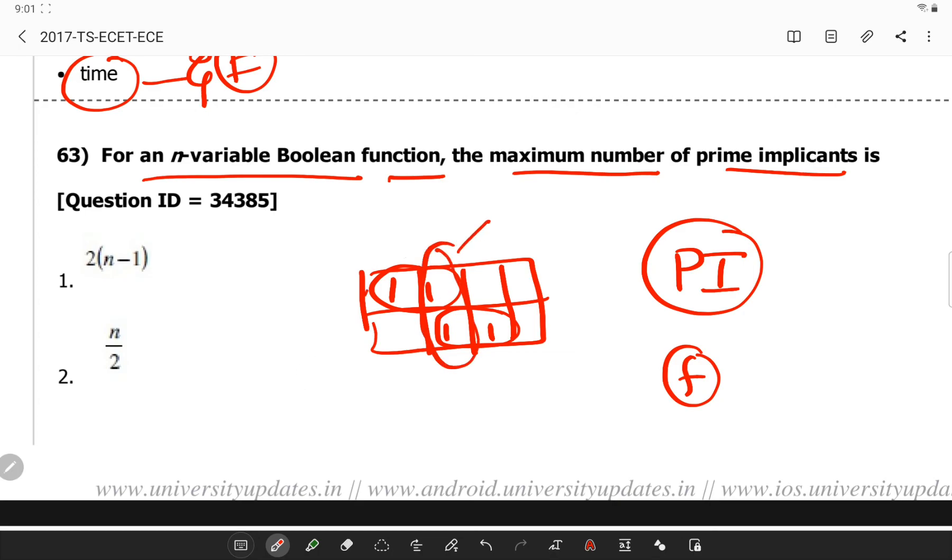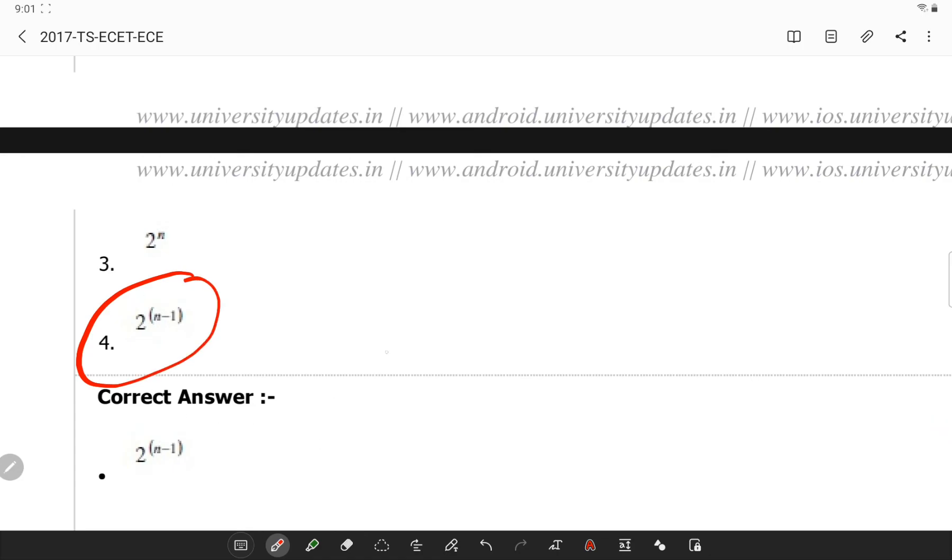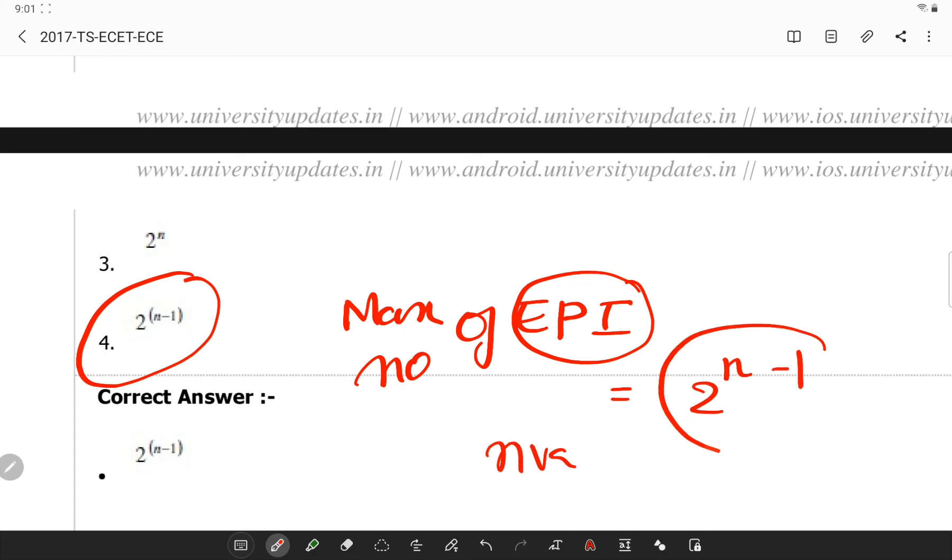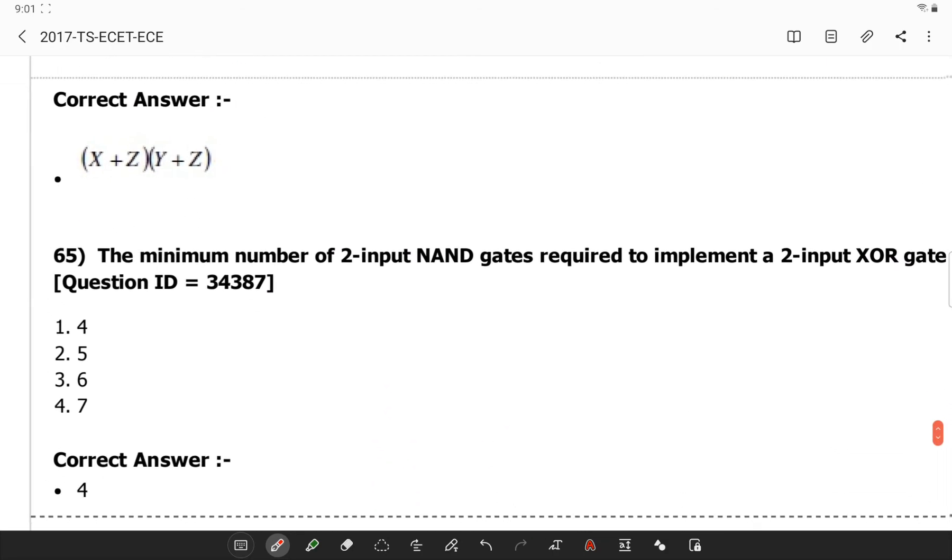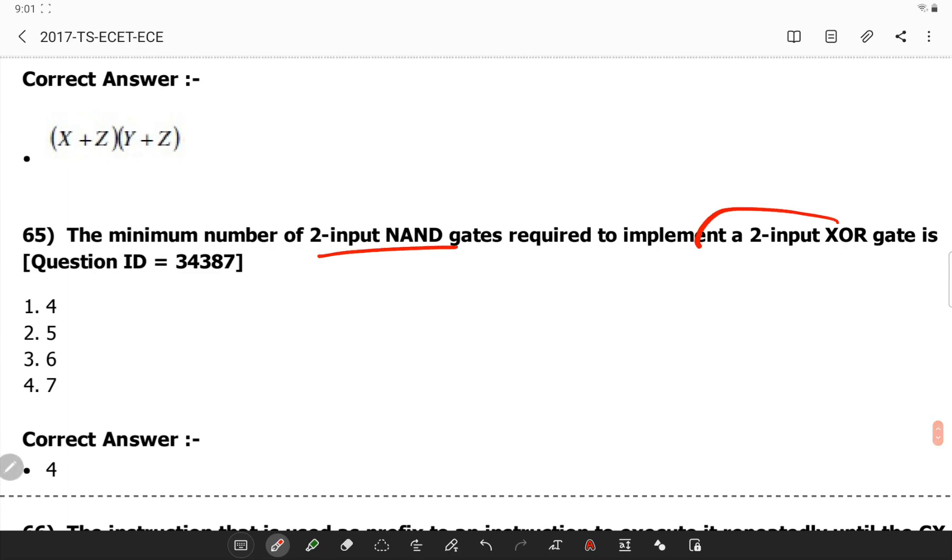Now there is no need of this. So here prime implicants are 2 in number. So you will be having them denoted by 2 power N minus 1. It is proved that the maximum number of essential prime implicants in a Boolean expression with N variables is 2 power N minus 1.